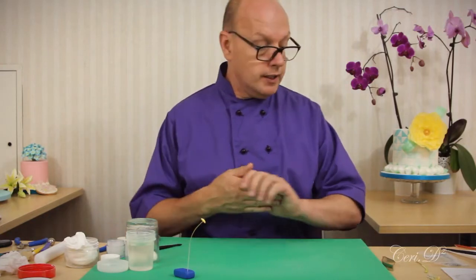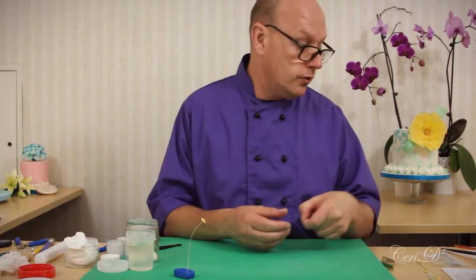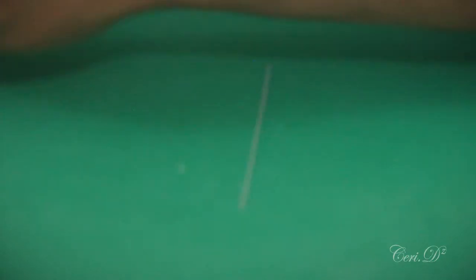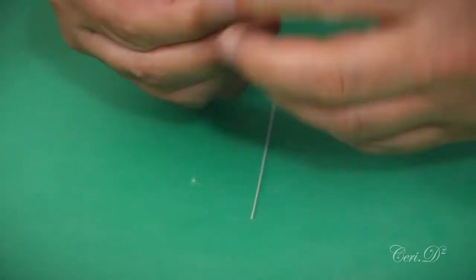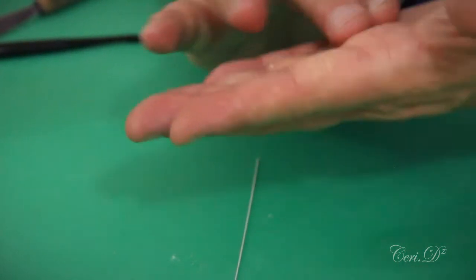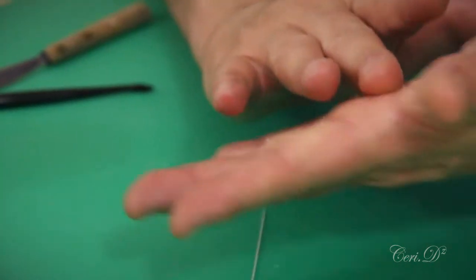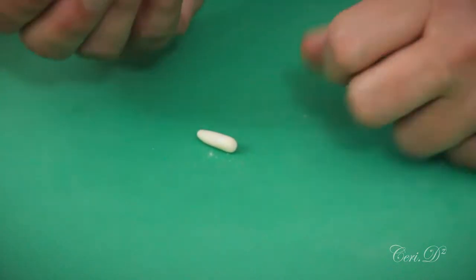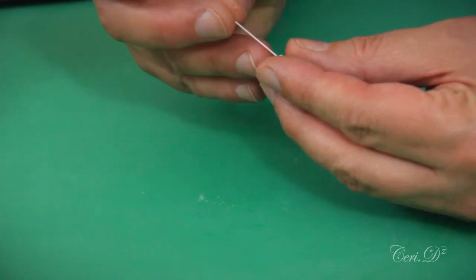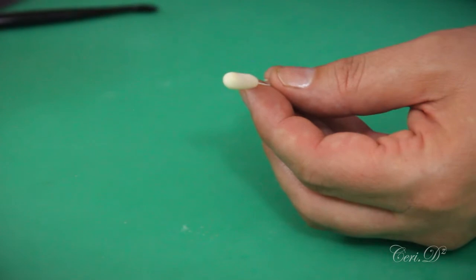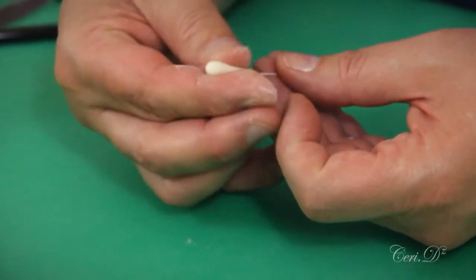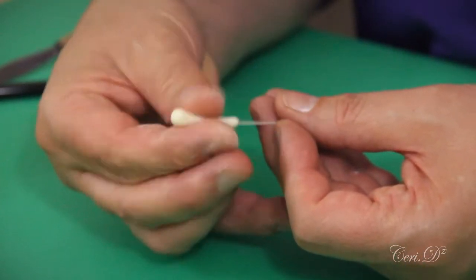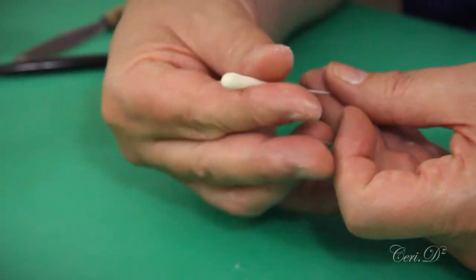Those were the stamens. When it comes to the pistil—that's the bit that comes through the middle of the flower—this is a 24 gauge wire. This can be a little bit fiddly if you've not done this before. I'm going to start off by rolling a little bit of a sausage, dip the end of my wire in, take the excess off, and then I'll twist this in until it's about two-thirds up. Using cornstarch fingers, I will work this down the wire. All I'm doing is gently supporting it, but I'm twisting and squeezing as I go.